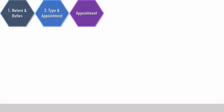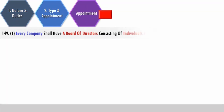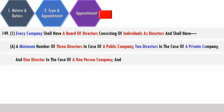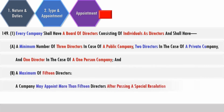Regarding the type and appointment of directors: every company shall have a board of directors consisting of individuals as directors. The minimum number is three directors in case of a public company, two directors in case of a private company, and one director in case of a one-person company. The maximum number of directors can be 15. A company may appoint more than 15 directors after passing a special resolution.